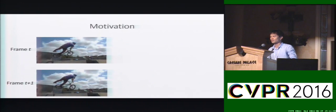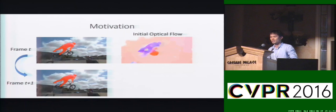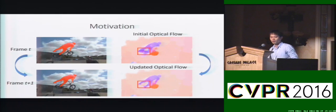Here's the motivation. Given two frames at time t and t plus one, we can estimate the object flow based on the movement of the object. And if we know the segmentation of the object, can we use this segmentation to improve the optical flow result? The answer is yes. You can observe that the segmentation is exactly the region where we want our optical flow to be accurate, especially around boundaries.